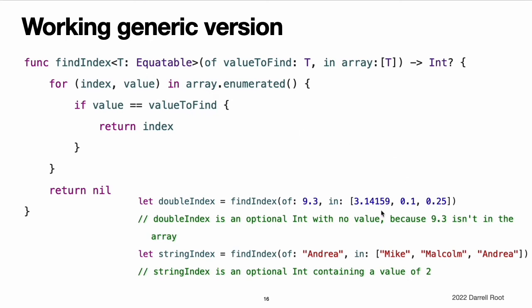The single type parameter for findIndexOf is written as T: Equatable, which means any type T that conforms to the equatable protocol. The findIndex function now compiles successfully and can be used with any type that is equatable, such as double or string.